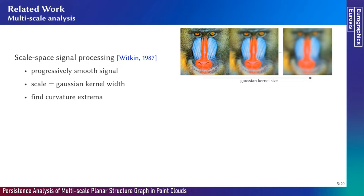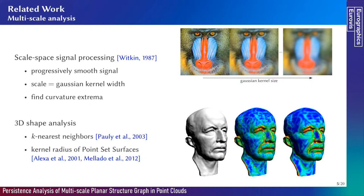In order to properly define a scale of analysis, the scale-space framework of signal processing can be considered. The basic idea is to convolve an image with a Gaussian kernel of increasing size and look at curvature extrema along the smoothing process. Extrema that persist at high scale are likely to be a feature, like an edge or a corner in an image. This has also been extended to 3D meshes and point clouds by varying the number of closest neighbors used to calculate surface variation, and recently with point set surfaces methods. In this case, the scale is the size of the smoothing kernel — a very intuitive definition as a distance in the ambient space — and that's why we adopt this scale-space approach.